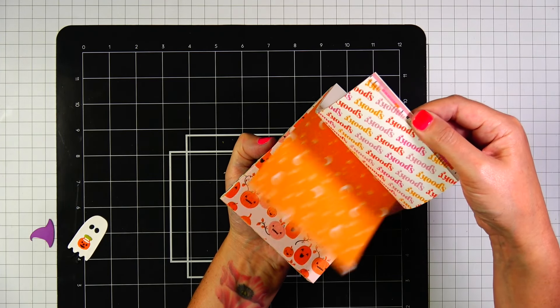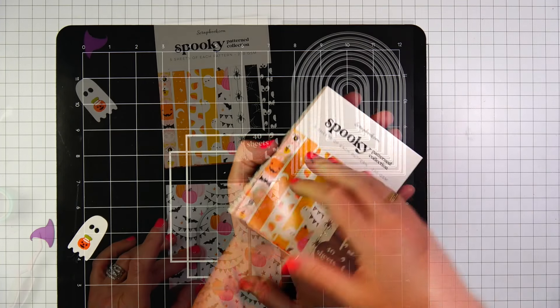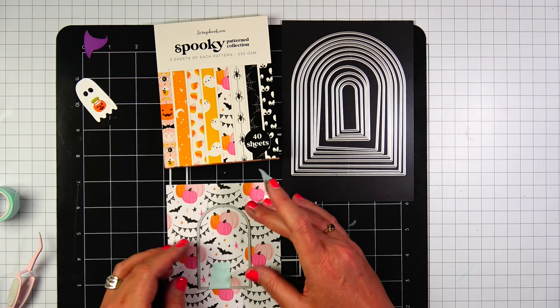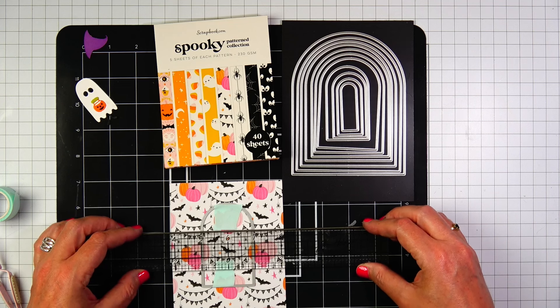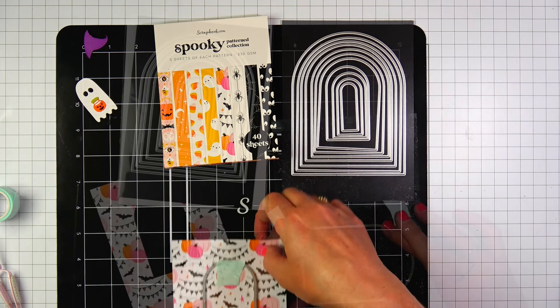Now I am going through the spooky paper collection to find the front of my card base. This is such an adorable paper collection. I love that there's pink all throughout the papers. I just think pink is such a fun color to use during Halloween. It's so unexpected.